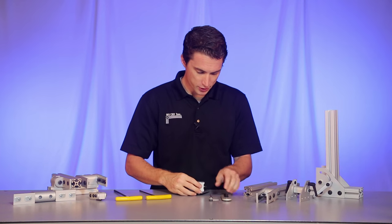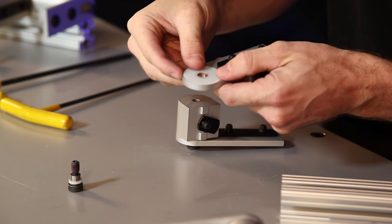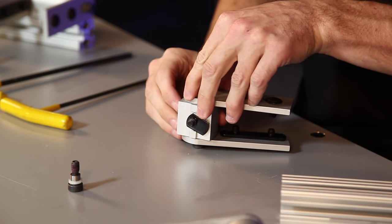So we'll go ahead and repeat the process on the other side, grab our arm, put a washer on the T-nut side, and line it up over the side of the nub.